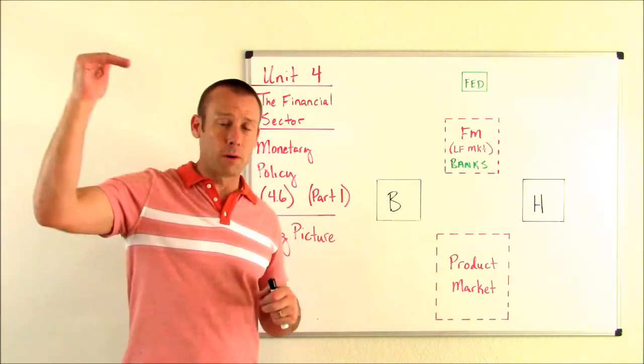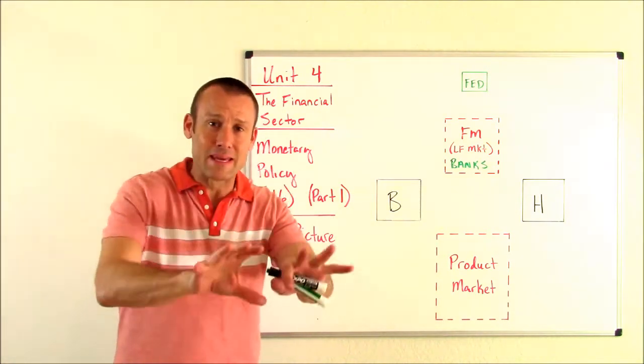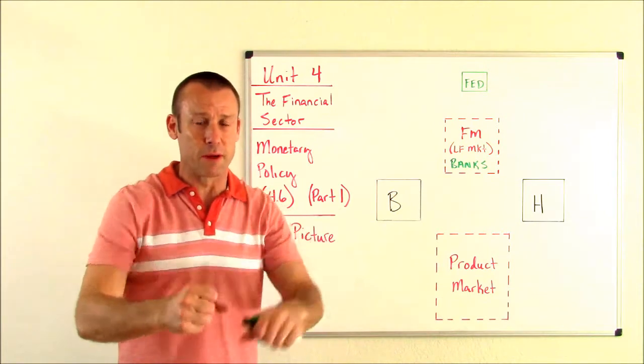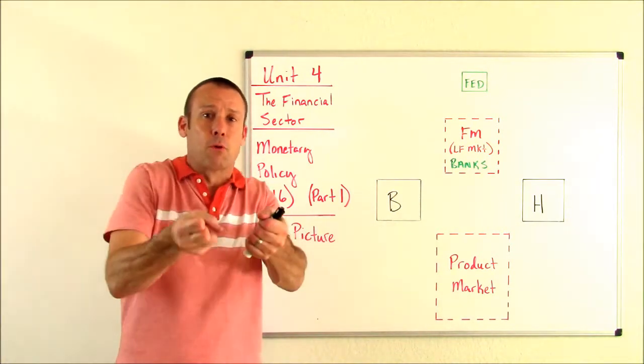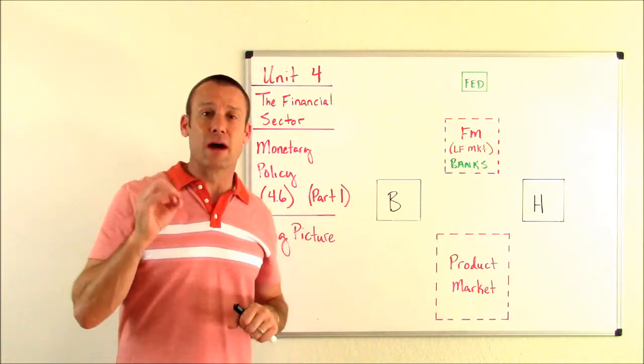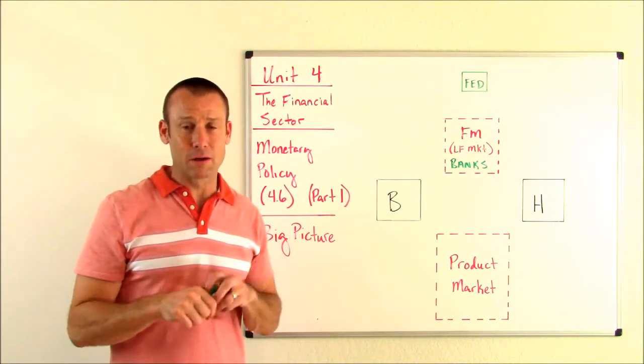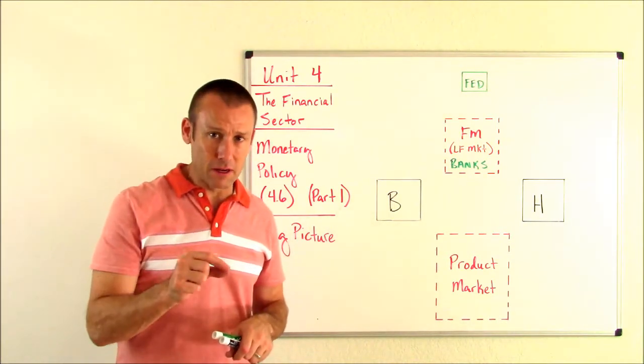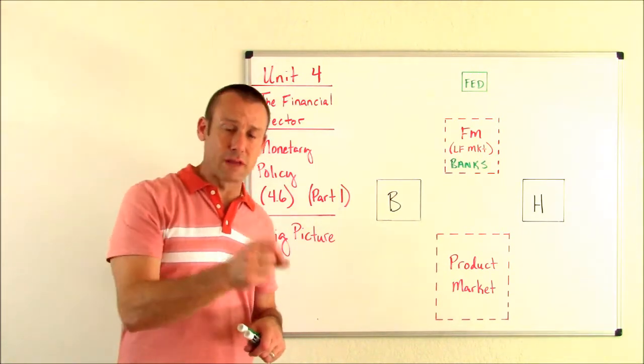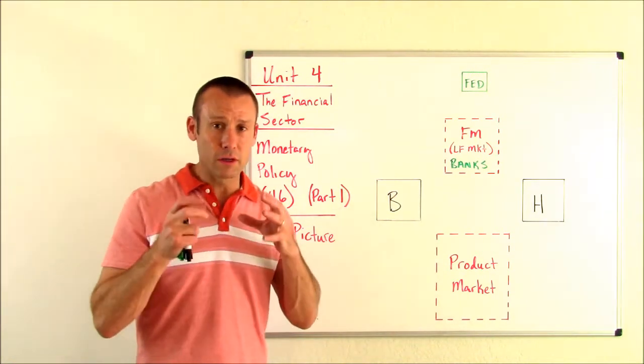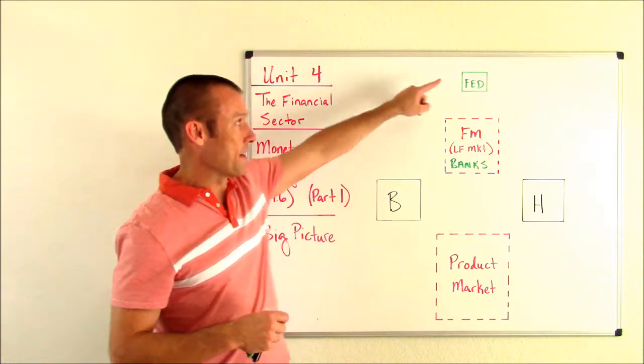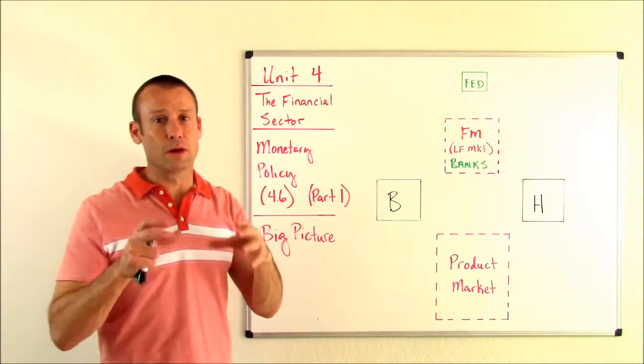That means when we're busting, we're going to want to push money into the economy and try to get more spending. When we're booming, we're going to pull money out of the economy, trying to get less spending. So once again, what is monetary policy? It is the manipulation of the money supply to stabilize the economy. Who is in control of the money supply? That's the Fed. The Fed is the US central bank.